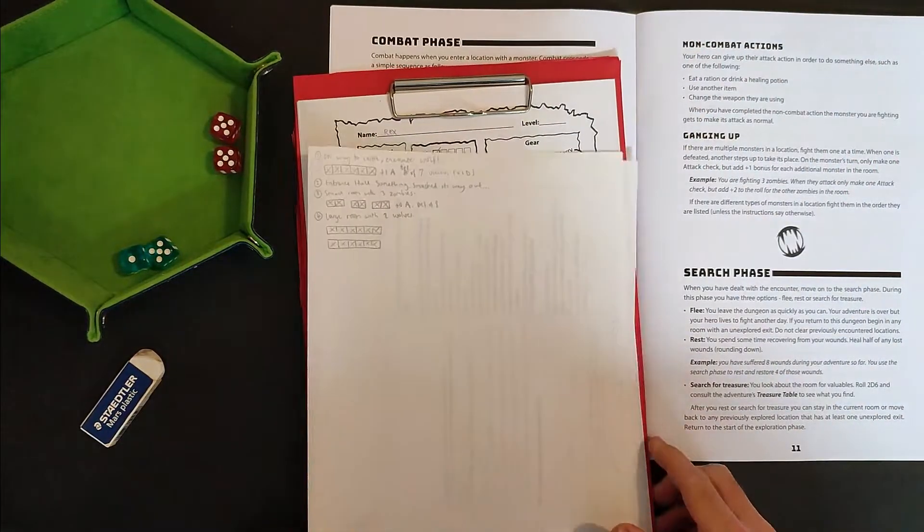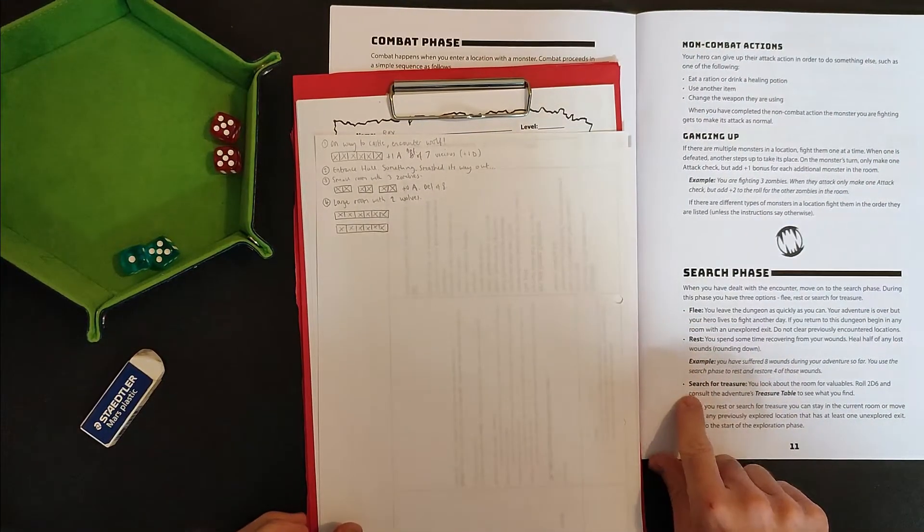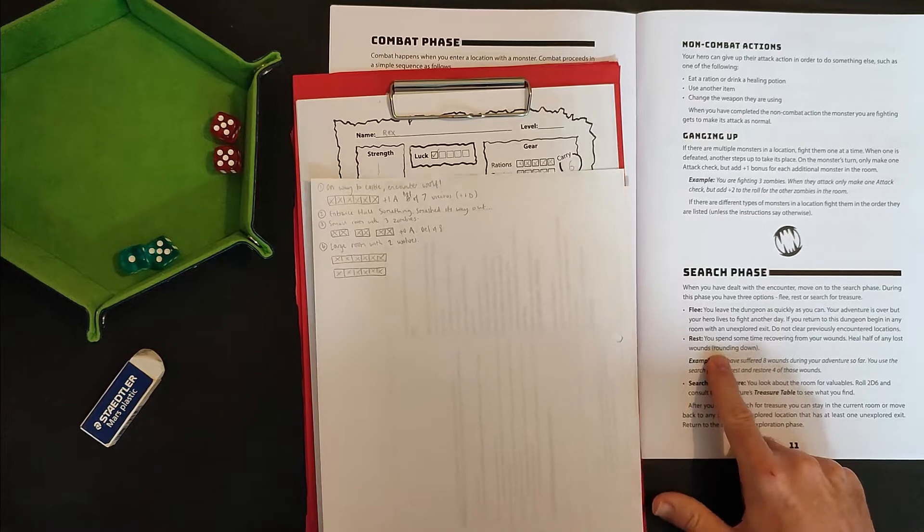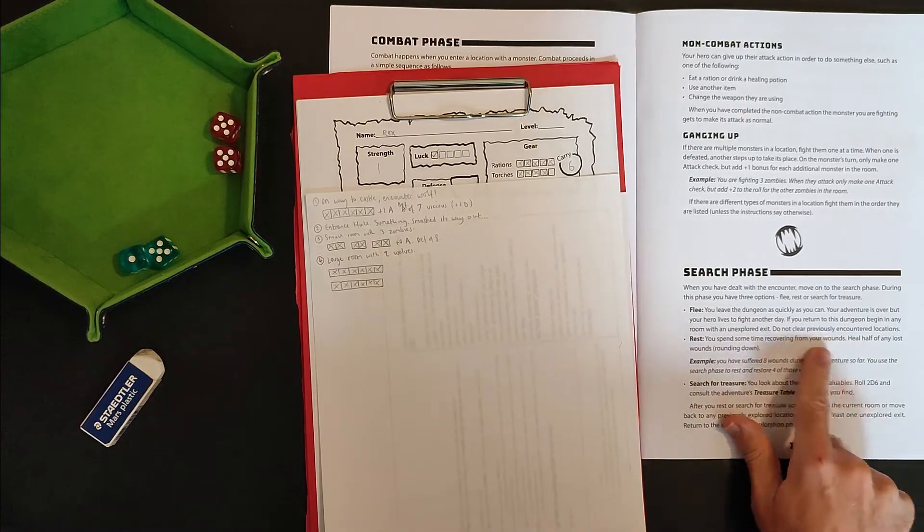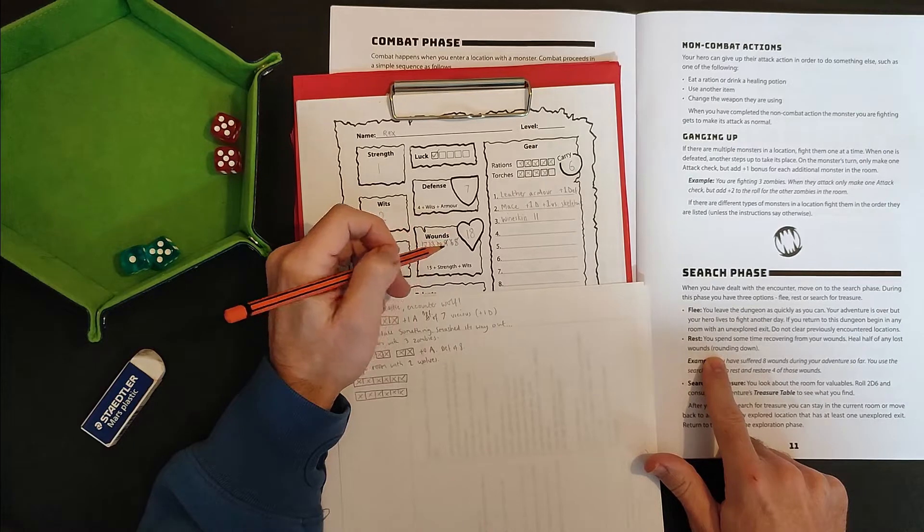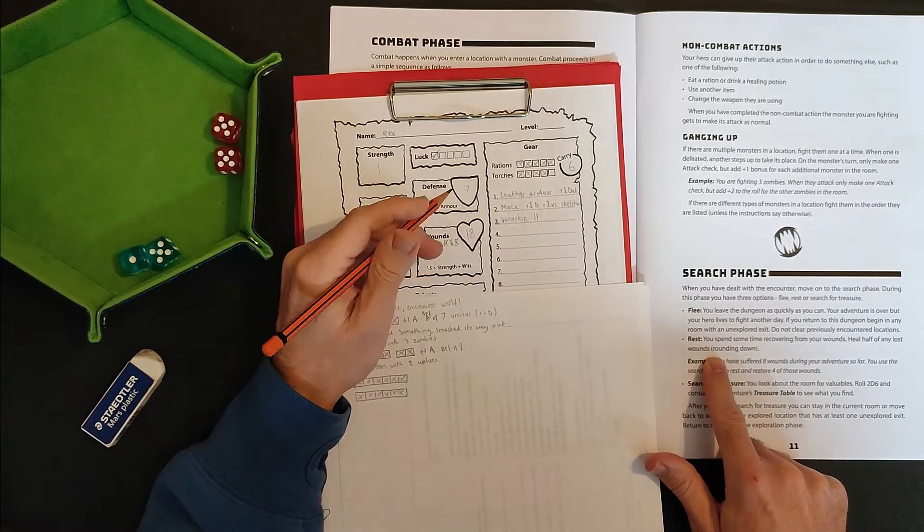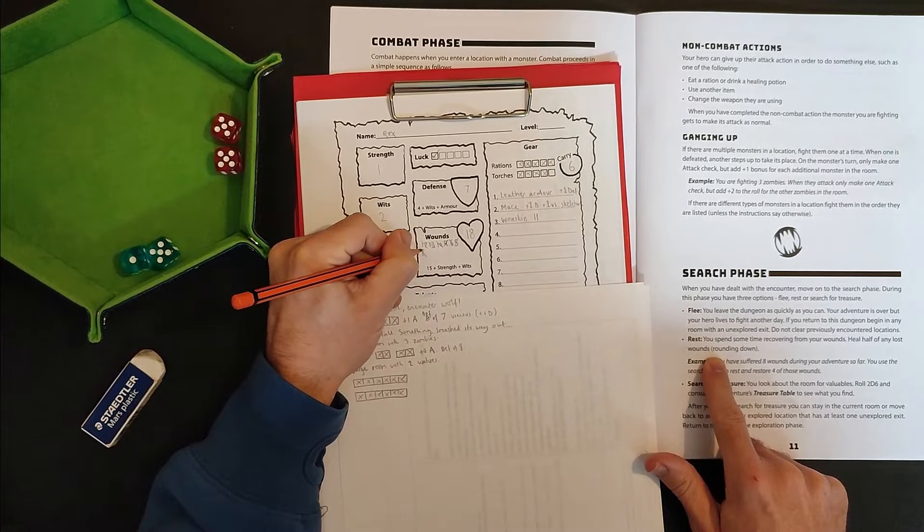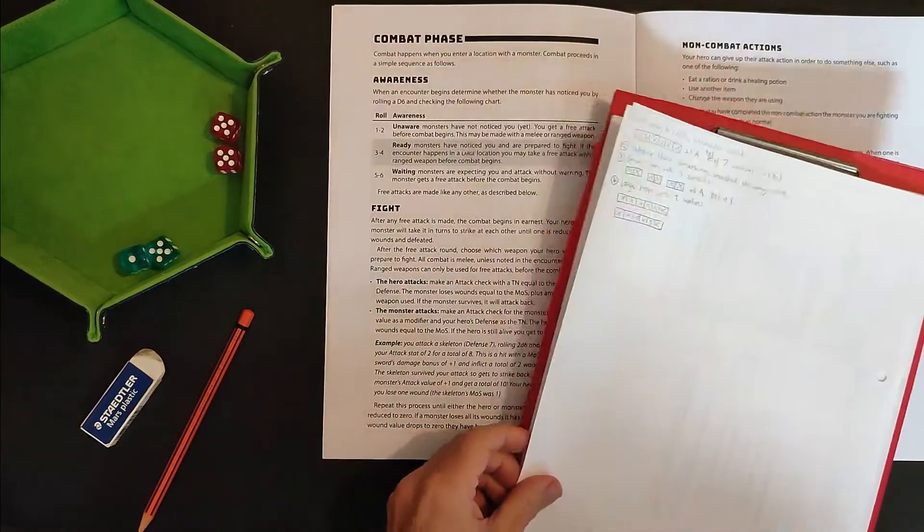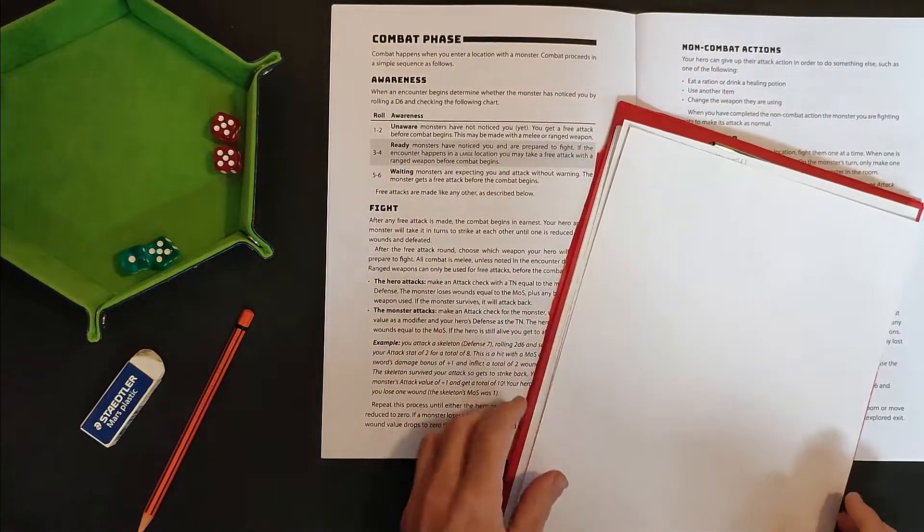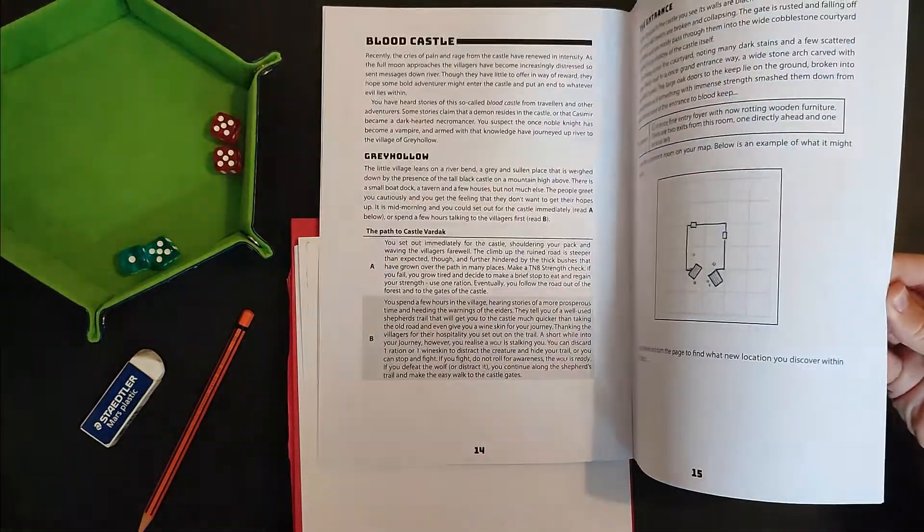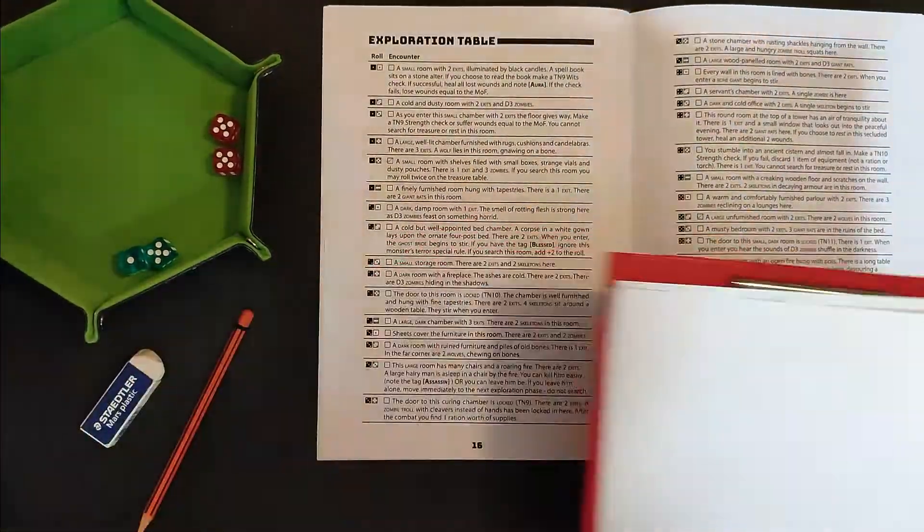Right. So once you're done with the fighting, which we are, we can either flee, rest or search. Last time I searched for treasure, I'm wondering maybe this time I should rest and recover some of my wounds. So I would heal half of any lost wounds. I'm currently on eight wounds, a total of 18, which means I've lost a total of 10 wounds. So I can regain five, which is pretty sweet, taking back up to 13 wounds. All right, so I didn't get to search for treasure, but at least I feel a little bit stronger in the old wound department. So with that done, we can go on to another room.